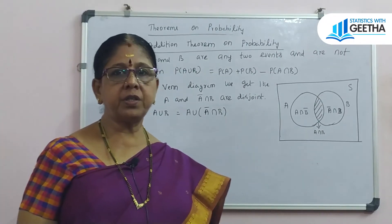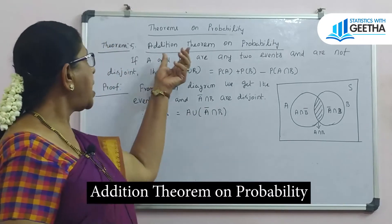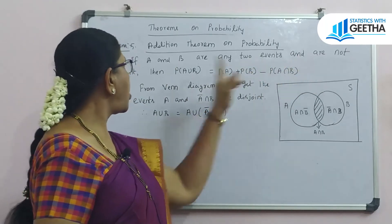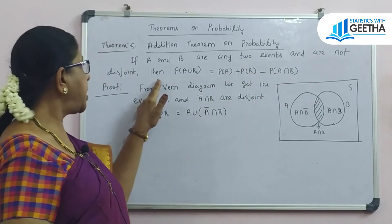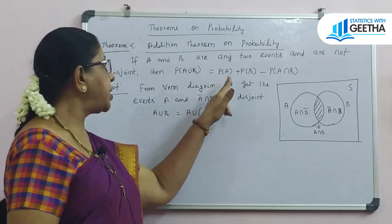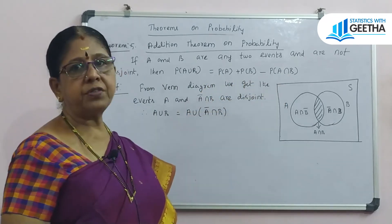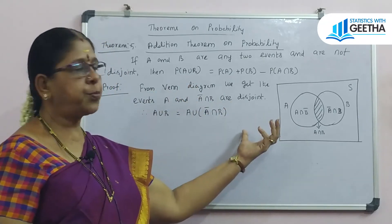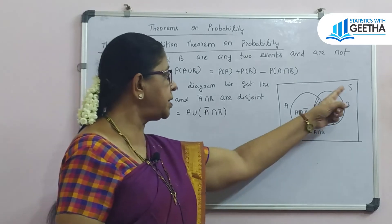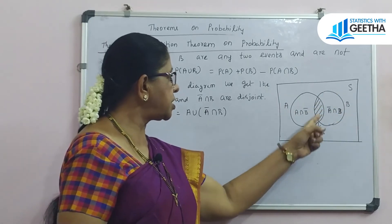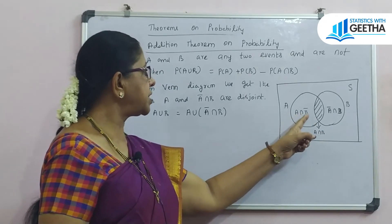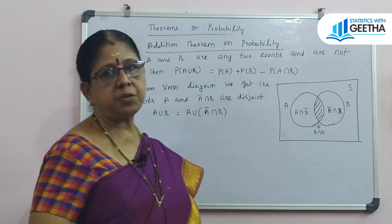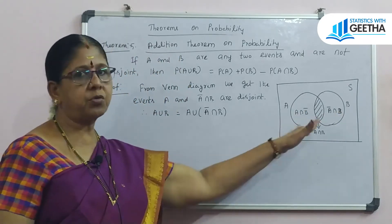Now we have to prove the important addition theorem on probability. If A and B are any two events and are not disjoint, then P(A ∪ B) equals P(A) plus P(B) minus P(A ∩ B). We will use the Venn diagram, where the sample space contains A and B, with the shaded portion being A ∩ B, A ∩ B complement, and A complement ∩ B.